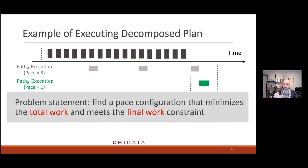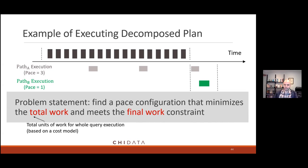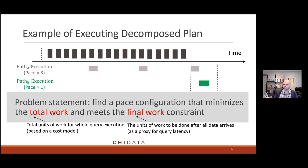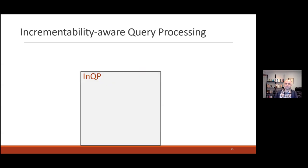So the total units of work come from a cost model, the total work at the end comes from the cost model, and the final work is a proxy for latency. These metrics correlate nicely with actual latency, as I'll show later.